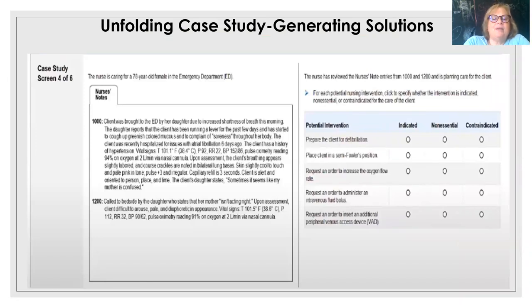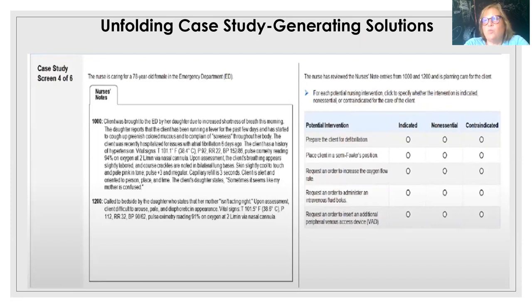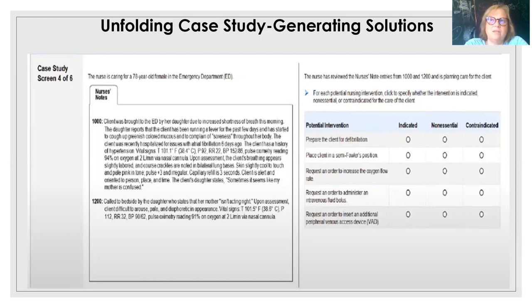At 12 o'clock there's an additional narrative note. You're called to the bedside by the daughter who states that her mother is not acting right. You assess the patient — she's difficult to rouse. That's the change: she was alert and oriented when she came in. She's now pale and diaphoretic; her skin was pink and dry on arrival. Vital signs: temp 38.6 — not much change; pulse 112; respiratory rate 32, up from 22 — a very significant difference; blood pressure 90/62, down dramatically from 156/86; and pulse ox has dropped to 91% on 2L by nasal cannula.